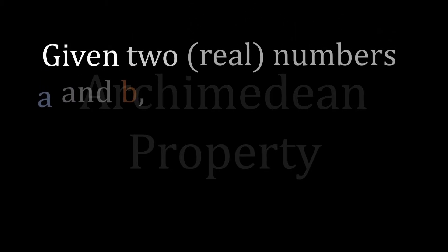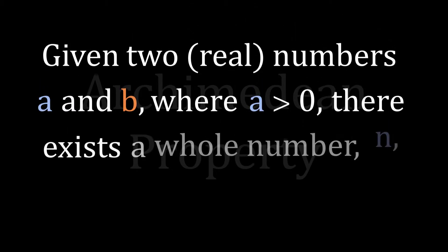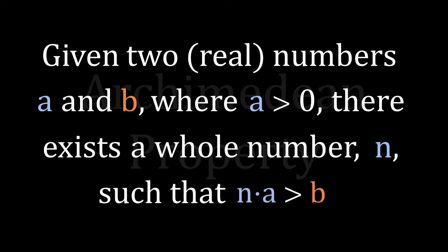Here's how it goes. Given two numbers A and B where A is positive, there exists a whole number N that can multiply with A to exceed B. Sound familiar?